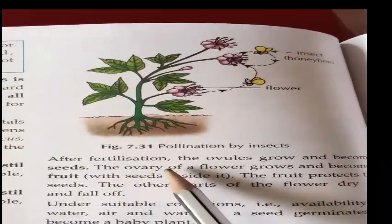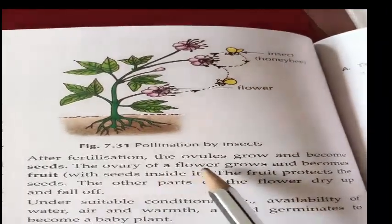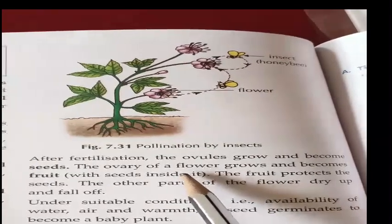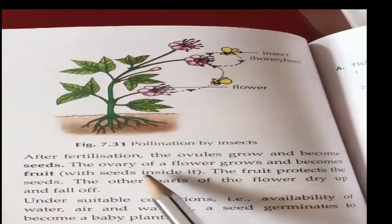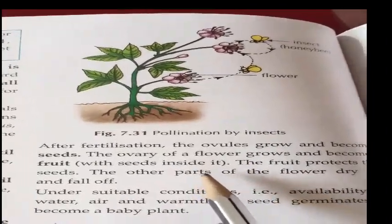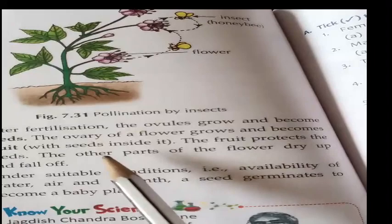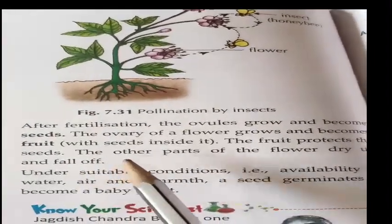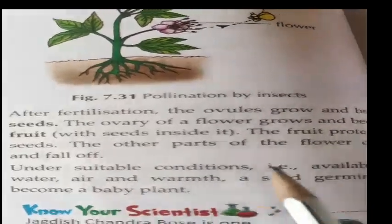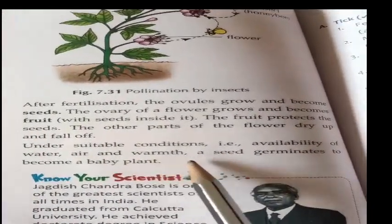After fertilization, the ovules grow and become seeds. The ovary of the flower grows and becomes the fruit — the ovary increases in size and becomes a fruit with seeds inside it. The fruit protects the seed, while the other parts of the flower dry up and fall off.